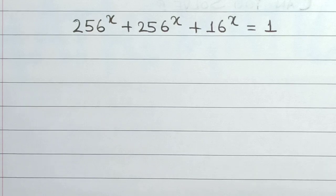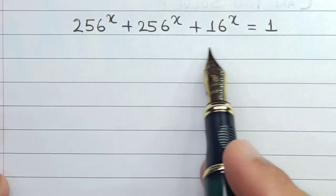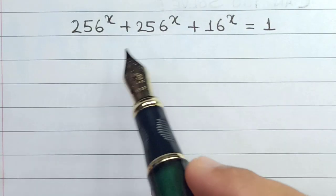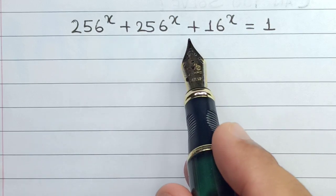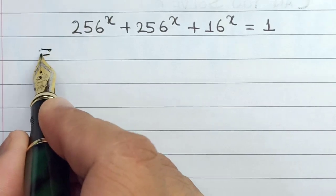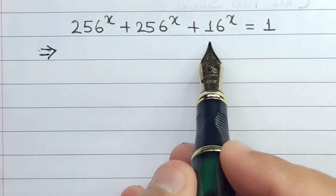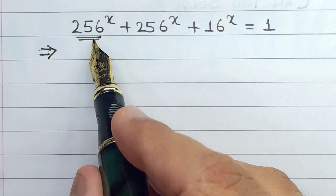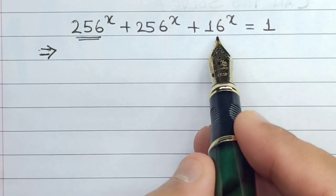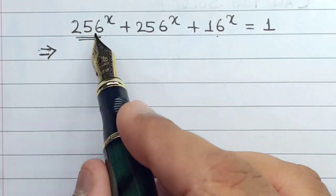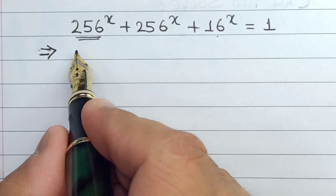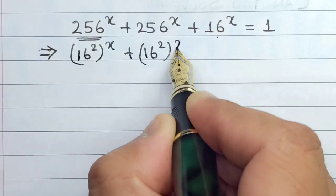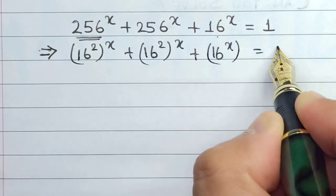But before I proceed, I would like to request you to please subscribe to our YouTube channel for more math related videos. So basically in this equation, the main challenge is that there is no division of power involved through which we can apply the standard rules of exponents and powers. The very first step is to bifurcate this equation into known numbers. As we know, 256 is basically a square of 16 — that is the hint from this 16. So these two 256s are the squares of 16. I will write 16 square to the power x, plus 16 square to the power x, plus 16 to the power x is equals to 1.